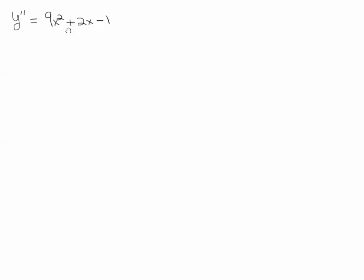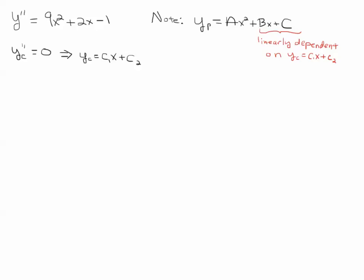Okay, the first thing we do is we solve the homogeneous ODE and we get the complementary solution, sometimes known as the homogeneous solution. And if you just integrate this twice, the first integration gives you a constant, that's the C1, the second integration gives you C1x plus C2.